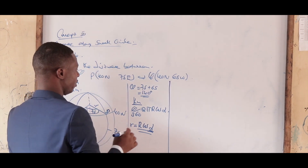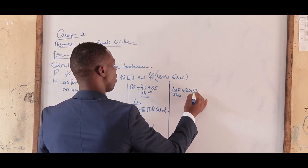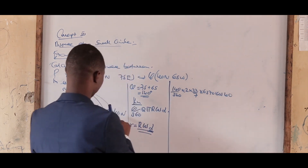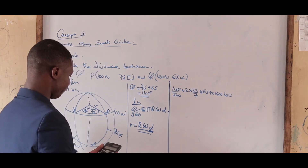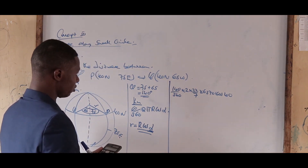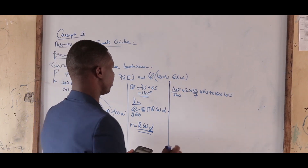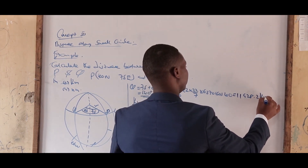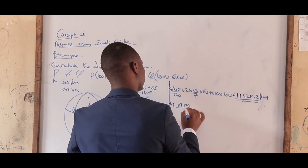To calculate the distance between P and Q in kilometers: take 140 over 360 times 2 times 22 over 7 times 6370 times cos 40. That is: 140 times 2 times 22 times 6370 times cos 40, divided by 360 times 7. This gives 11,928.2 kilometers.